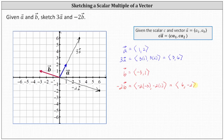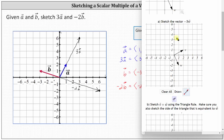Now let's look at one more example using the online graphing tool. We're given two vectors on the coordinate plane and asked to sketch the vector negative three times vector w. Vector w has an x component of one and a y component of negative two. The vector negative three times vector w will have three times the magnitude but point in the opposite direction — so instead of going right one and down two three times, we go left one and up two three times.